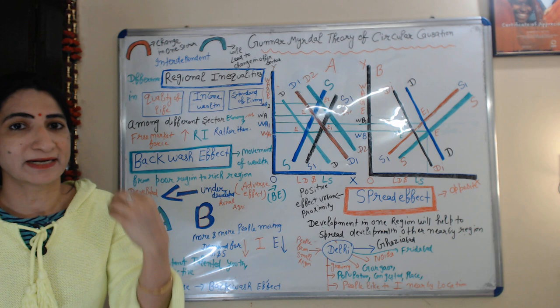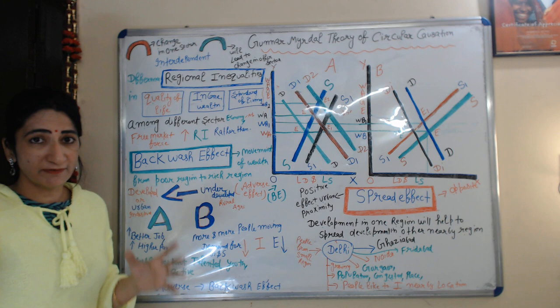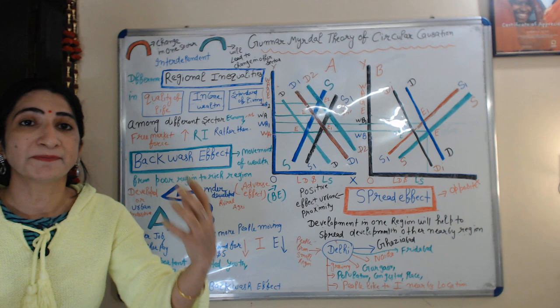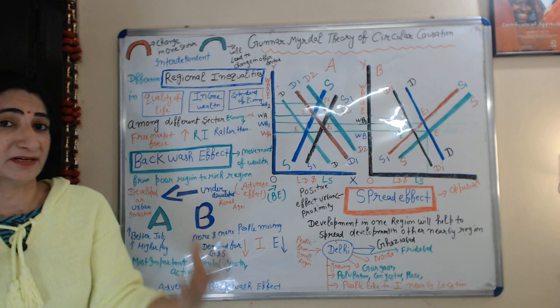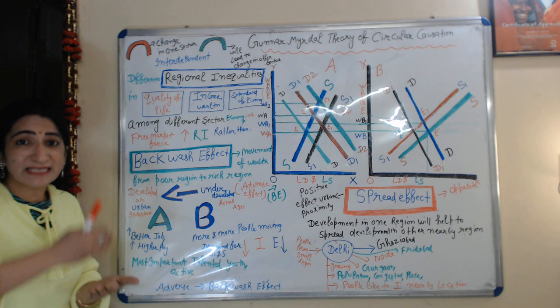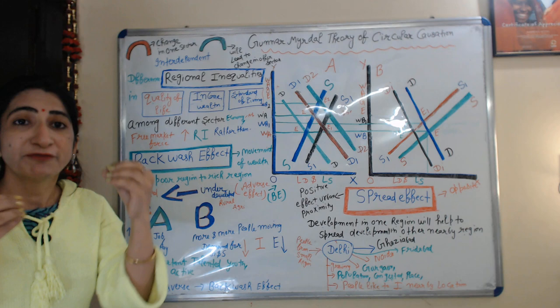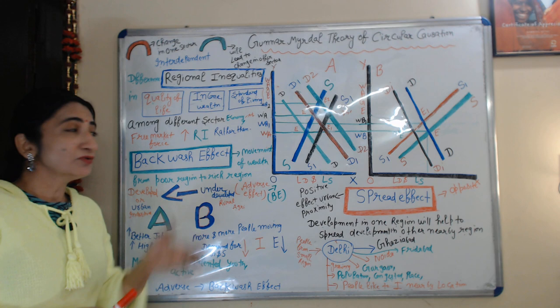Regional inequalities mean differences in quality of life, income, wealth, and standard of living among different sectors of the economy — some sectors are very developed and advanced, while some sectors are very underdeveloped. According to this theory, free market forces increase regional inequality rather than decrease it.